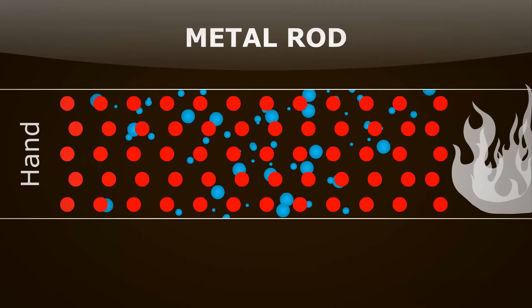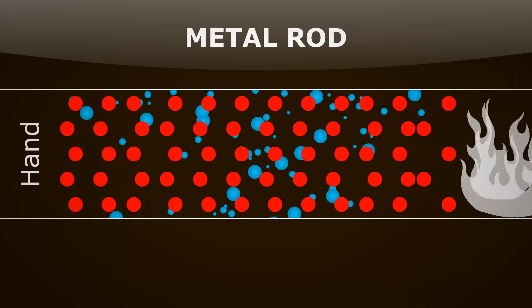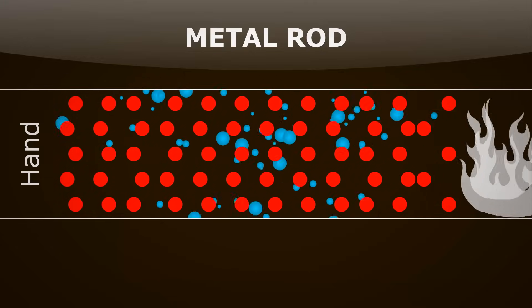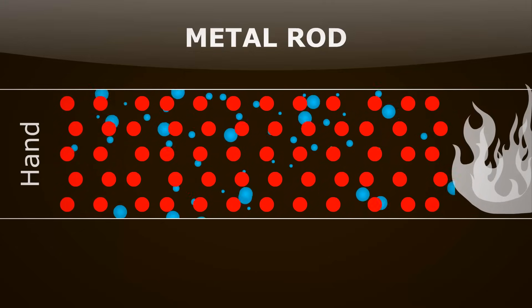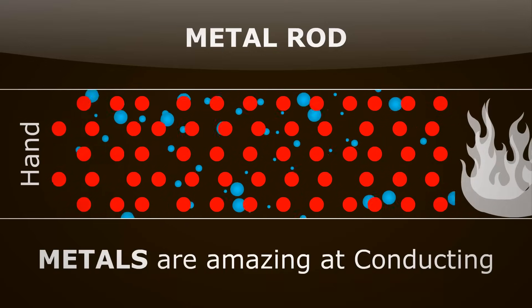They can bump into all the ions throughout the metal. So they can gain heat from the hot end and race straight down and bump into an atom at the cold end. Therefore, spreading the heat through the metal much, much quicker. This is why metals are so amazing at conducting.